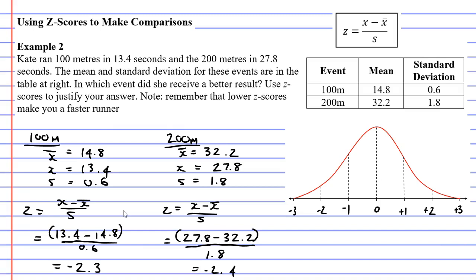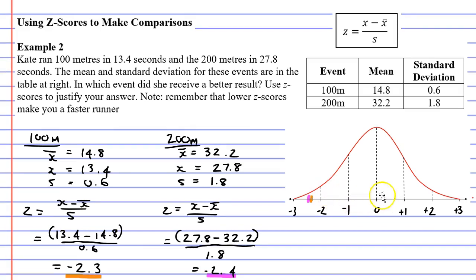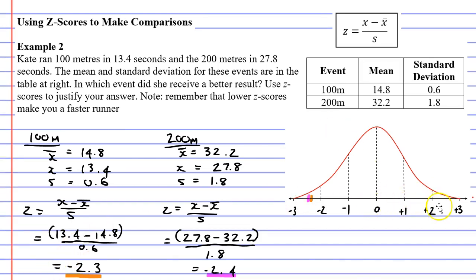Now, these z-scores are very close together. I'm going to mark them on my bell curve. So negative 2.3, it's probably about there in orange. And negative 2.4, I'll do in pink. It's about at this spot here, just next to each other. Now, negative 2.3 is actually a higher z-score than negative 2.4. And we can see that because it's closer to the right side. The further we go to the right, the higher the z-score becomes.